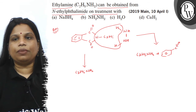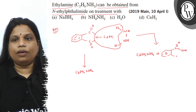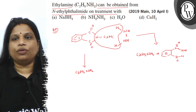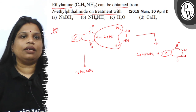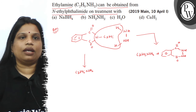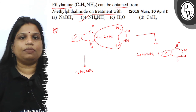According to Gabriel phthalimide synthesis, ethylamine can be synthesized by using hydrogen and N-ethyl phthalimide. So the correct option is B.